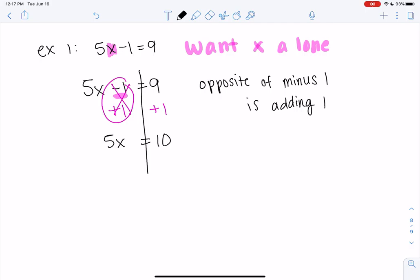Now we have 5 times x. That's why I would read the left side. So the opposite of multiplying by 5, or times 5, is dividing by 5. So we're going to go ahead and divide both sides by 5.